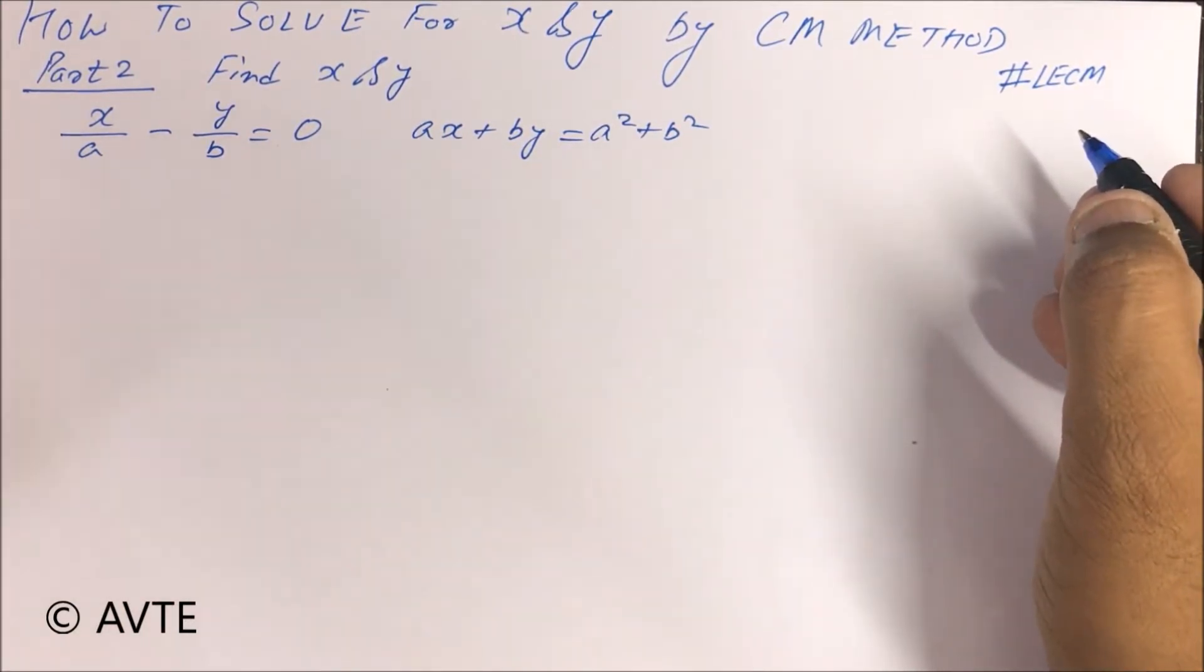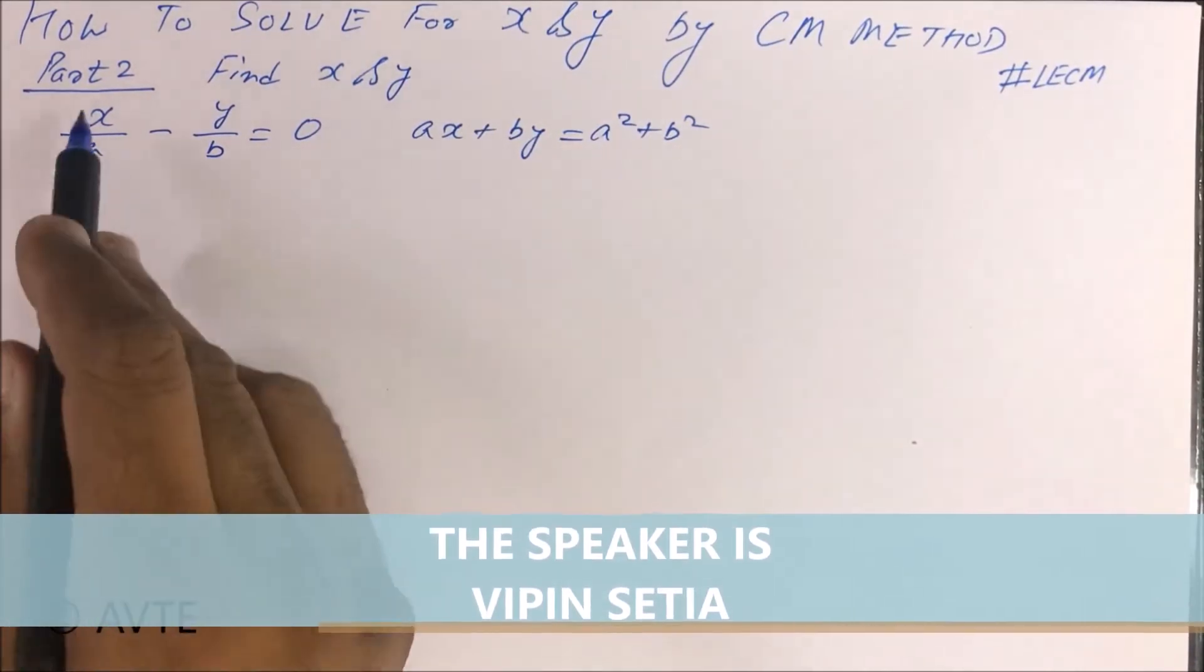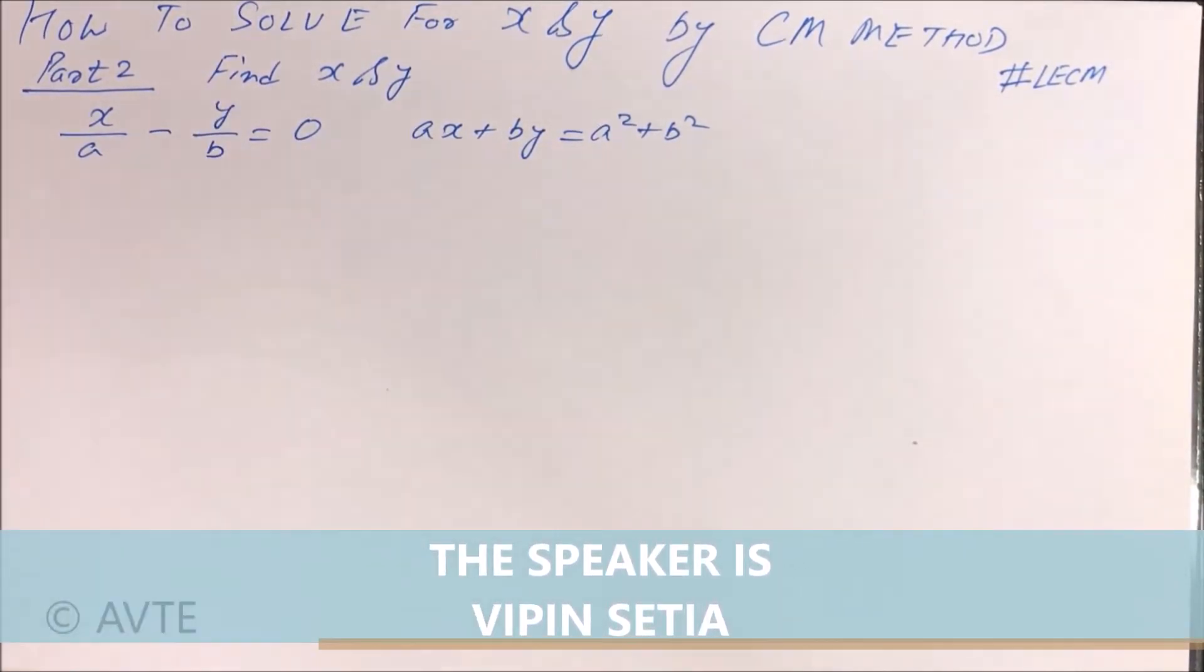cross multiplication method in linear equation in two variables. So this is an example related to algebra: X upon A minus Y upon B is equal to 0, and